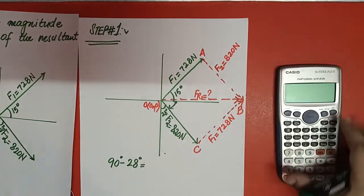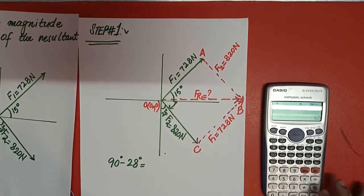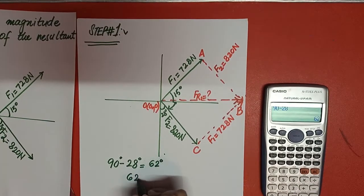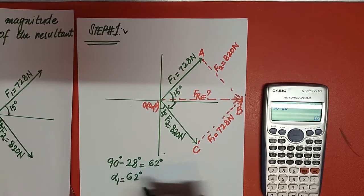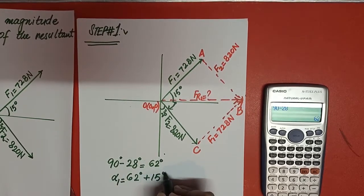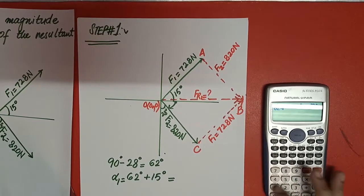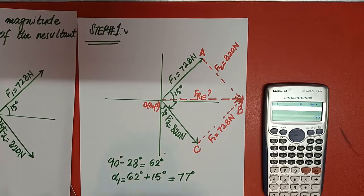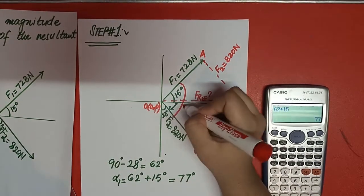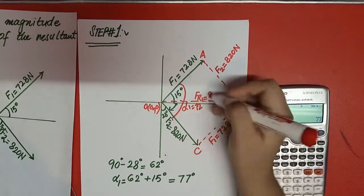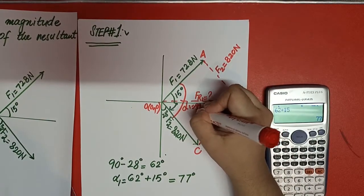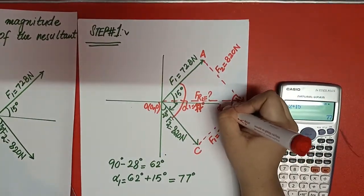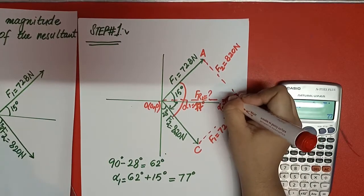Adding 62 degrees to 15 degrees gives us alpha 1. So 62 plus 15 equals 77 degrees. Therefore, alpha 1 equals 77 degrees.